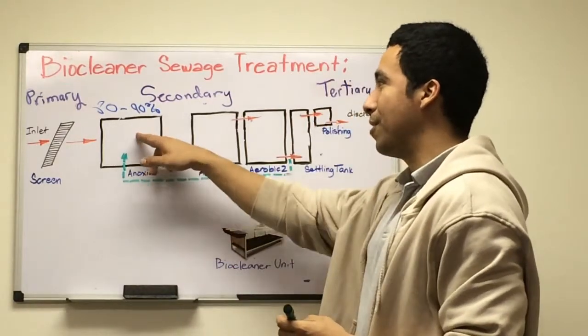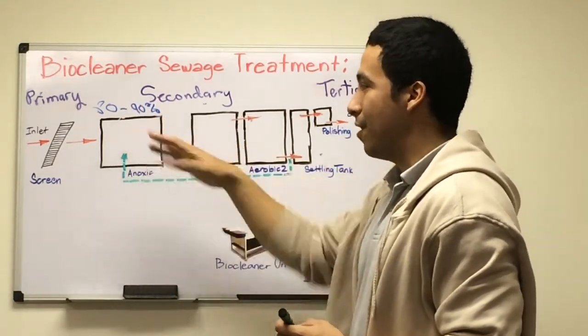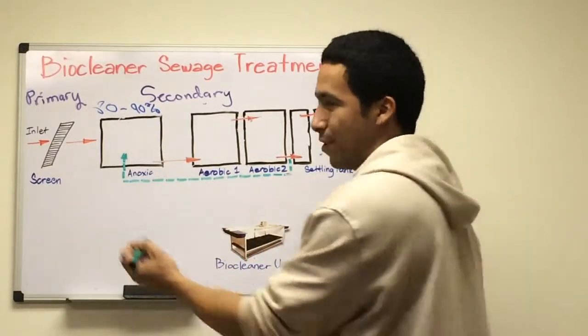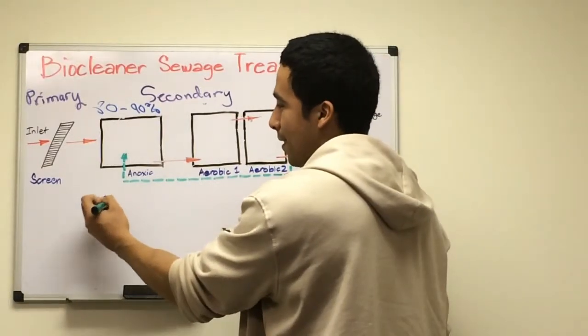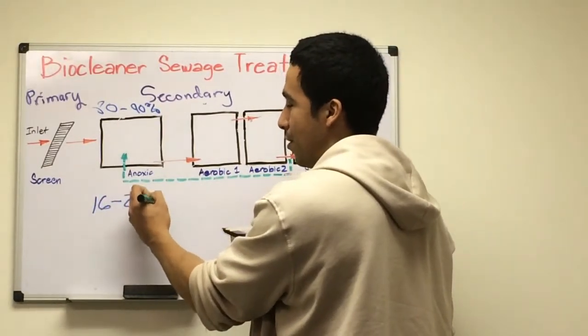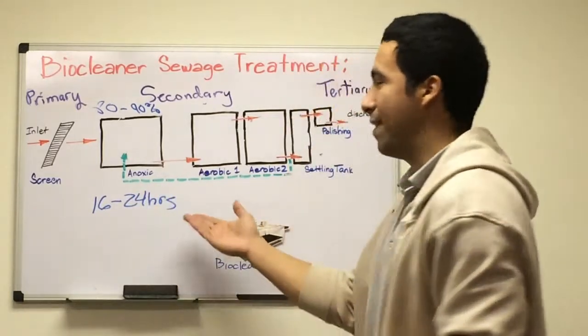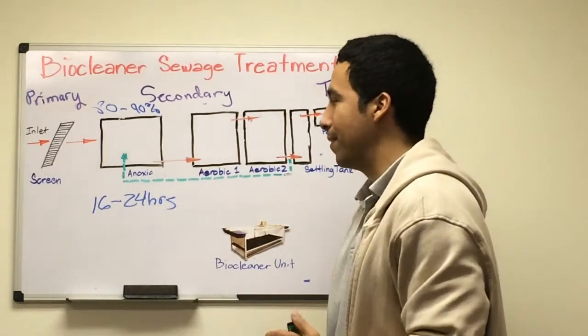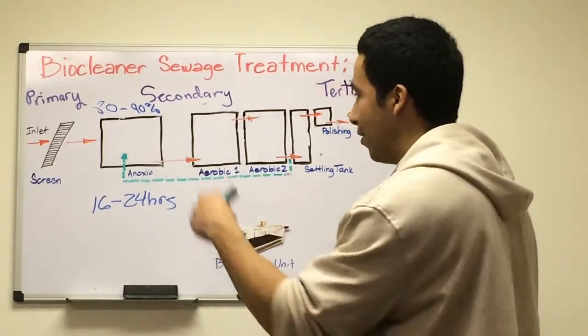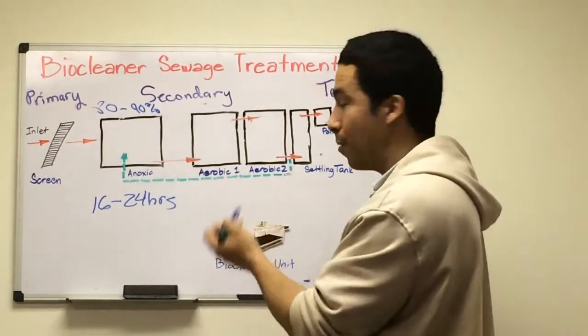To design the anoxic tank, we usually consider using 16 to 24 hours of retention time. It will vary depending on the waste stream and flow rate. After anoxic treatment, we have two zones of aerobic treatment.